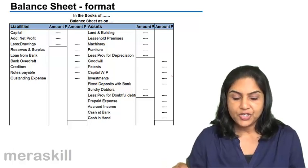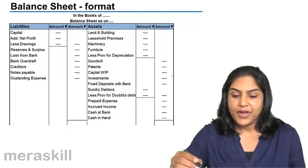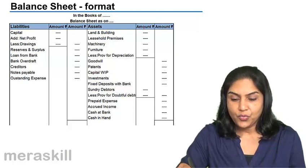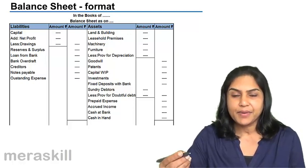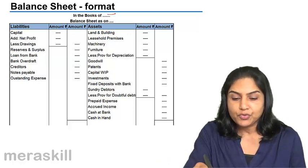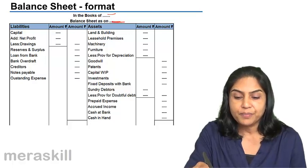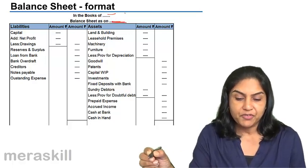This is the format of a balance sheet. We have assets on one side, assets on the right-hand side by convention, books of so-and-so, balance sheet as on a particular date, maybe it would be 31st March.